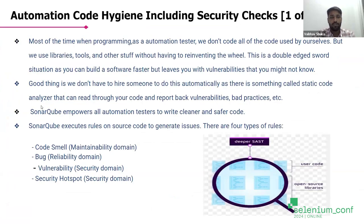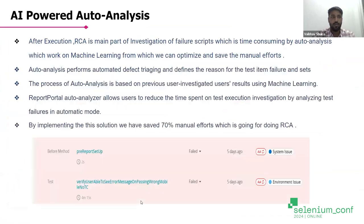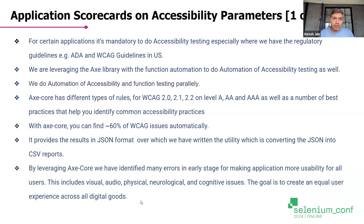Here we are talking about code smells with SonarQube, where we are getting the code smells, bug vulnerabilities, and hotspot fixes. And this is the sample report which we have covered for one of our projects — you can see all are in the green and all are passing. And one more is the auto-analysis of Report Portal, where we are reducing the maintenance cost by 70%. Thank you, Vaibhav — I'll have to cut you there. It's only three minutes, unfortunately.